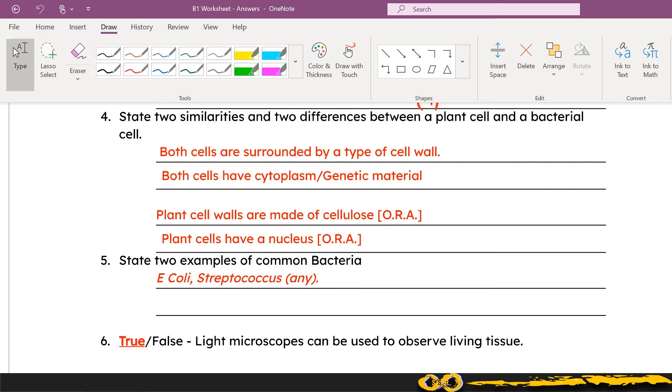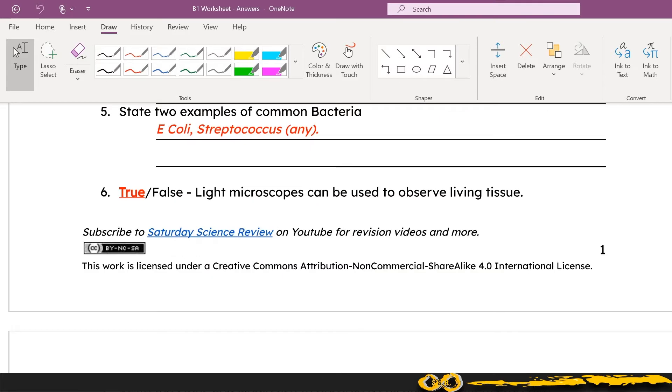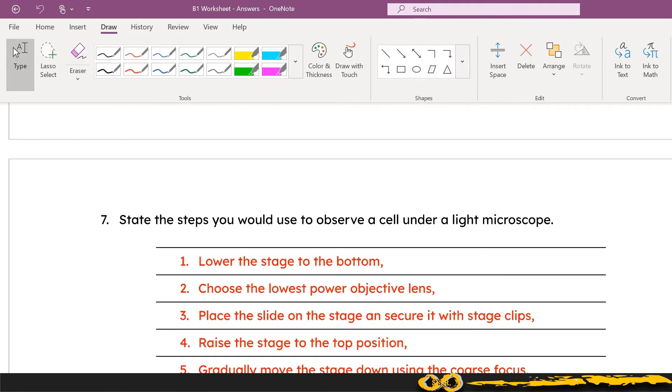In terms of differences between plant and bacterial cells, hopefully you're able to find out those differences fairly easily, thinking about the fact that yes there are some similarities with those cell walls but also some differences.